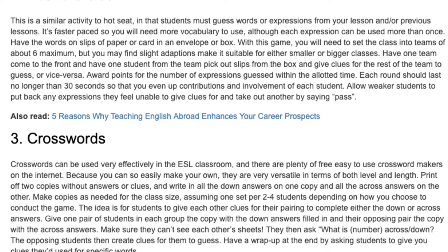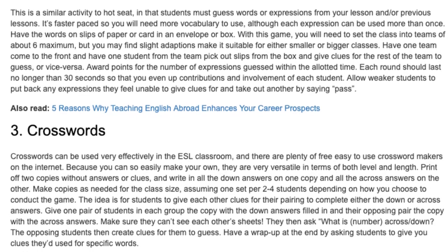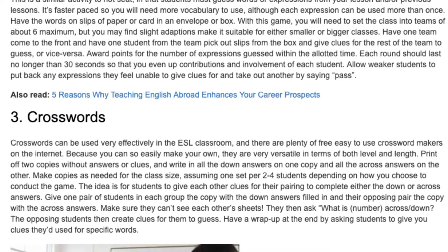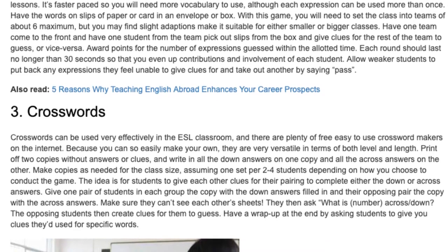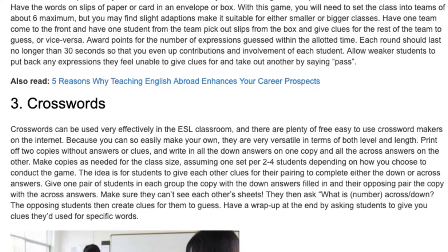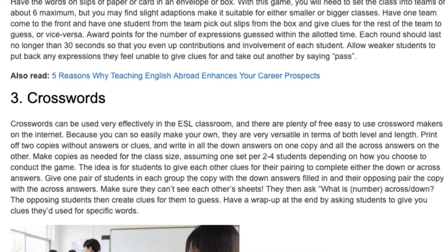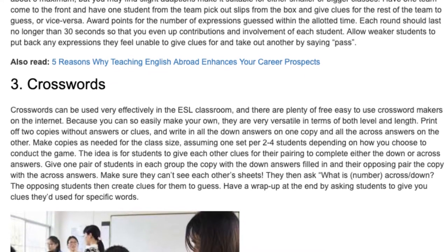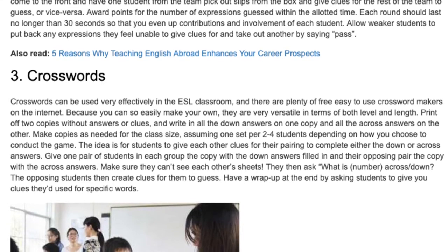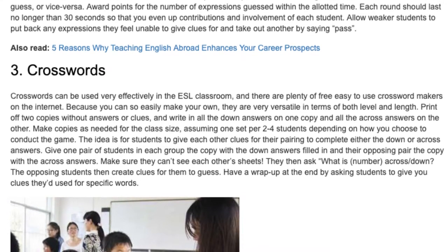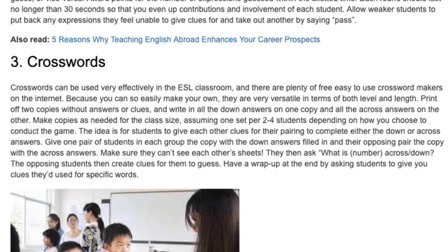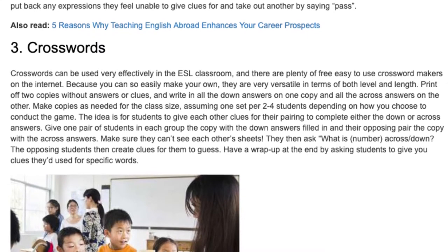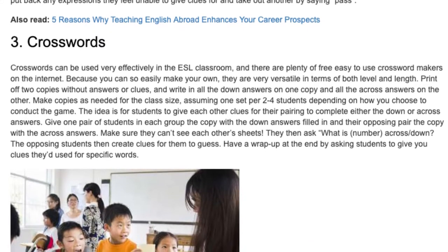Make copies as needed for the class size, assuming one set per two to four students depending on how you choose to conduct the game. The idea is for students to give each other clues for their pairing to complete either the down or across answers. Give one pair of students in each group the copy with the down answers filled in and their opposing pair the copy with the across answers. Make sure they can't see each other's sheets. They then ask what is number across or down, and the opposing students create clues for them to guess. Have a wrap-up at the end by asking students to give you clues they used for specific words.